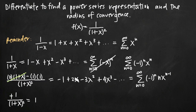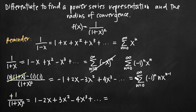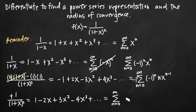Multiplying by negative 1: the left-hand side becomes positive 1 over 1 plus x squared, matching our original function f of x. Each term flips sign: negative 1 becomes positive 1, then minus 2x, plus 3x squared, minus 4x cubed, and so on. On the right-hand side, multiplying by negative 1 combines with negative 1 to the n — since the bases are the same, we add exponents — giving negative 1 to the n plus 1 times n times x to the n minus 1.